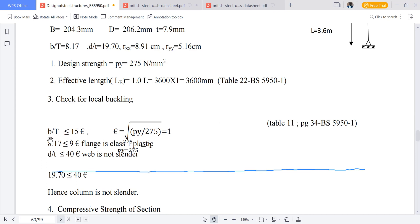Now the check: we know that our value of b over t is 8.17, which is less than or equal to 15. Hence the flange is plastic.